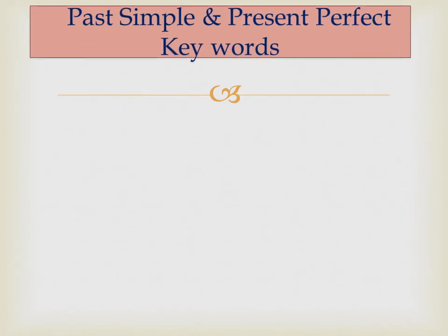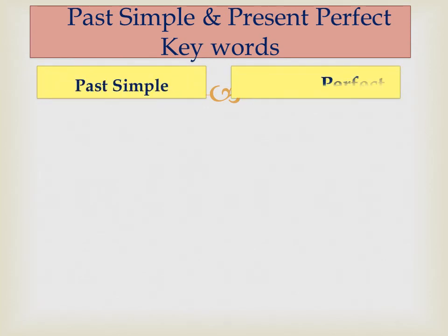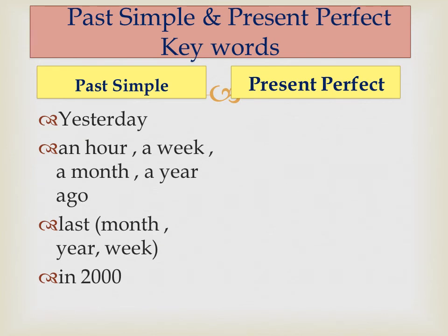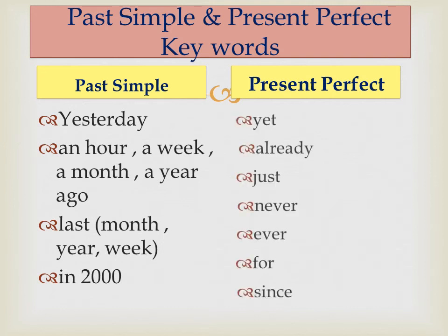Can keywords help differentiate between the past simple and the present perfect? Yes, they can help a lot — but if there are no keywords, think about the meaning of the sentence. Keywords for the past simple include: 'yesterday,' 'ago' (an hour ago, a week ago, a month ago, a year ago), 'last' (last month, last year, last week), and 'in' plus any year that happened in the past.